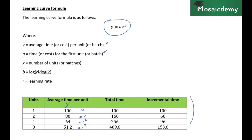x is the number of units or batches — that's this column over here. b is log of r, which is the learning rate, over log of 2. Remember, everything is in terms of doubling production — that's why we double production when we move down the table. And r is, of course, the learning rate.